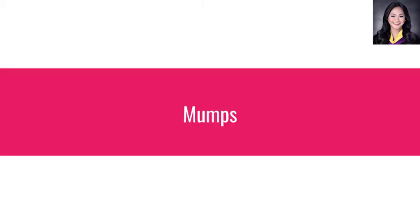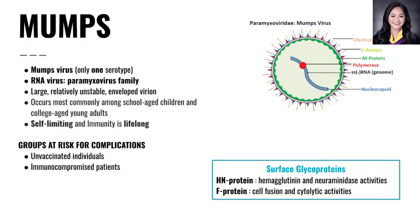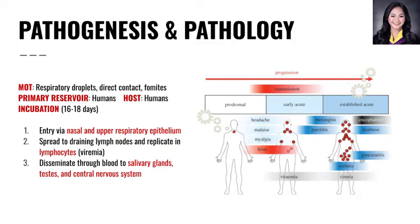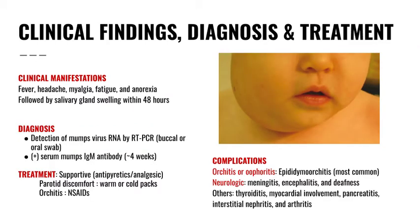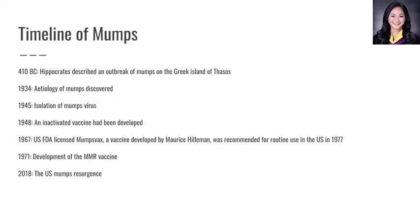Mumps virus has only one serotype. It occurs most commonly among school-aged children and college-aged young adults, and it is self-limiting with lifelong immunity. Its modes of transmission are respiratory droplets, direct contact, and fomites, and it disseminates through blood to salivary glands, testes, and central nervous system. Its clinical manifestations include salivary gland swelling within 48 hours. Diagnosis is detection of mumps virus RNA by RT-PCR via buccal or oral swab, and its treatment is supportive.